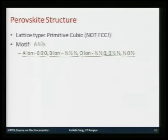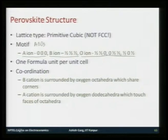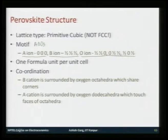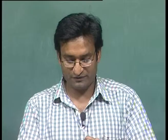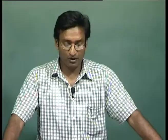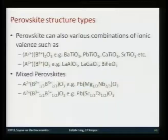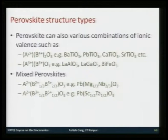There is one formula unit per cell. B is surrounded by six oxygen atoms making an oxygen octahedra, shared at corners. A is surrounded by 12 oxygen atoms making a dodecahedra, touching the faces of the octahedra. There are not only ABO3 compounds: you can also have A2+ B4+ O3 such as BaTiO3, PbTiO3, CaTiO3, and SrTiO3, all well-known ferroelectric oxides. You can also have A3+ B3+ O3 such as lanthanum aluminate, lanthanum gallate, or bismuth ferrite.